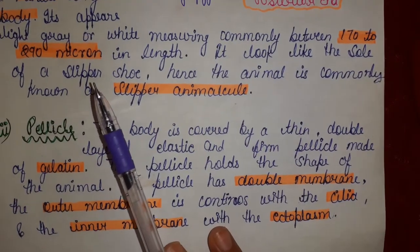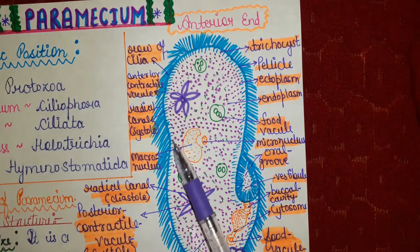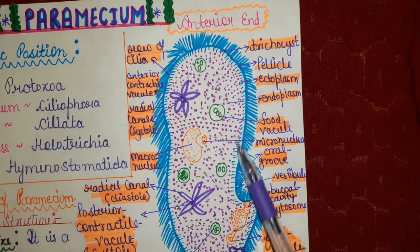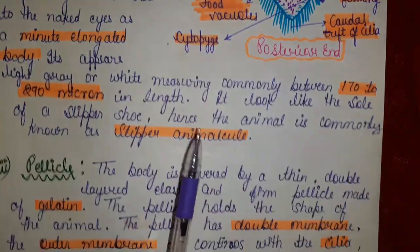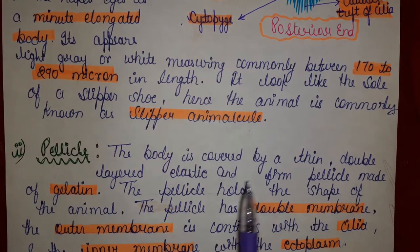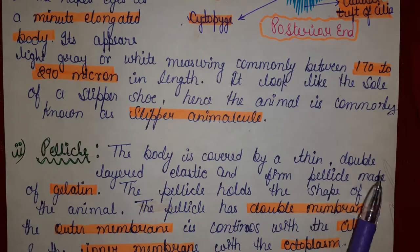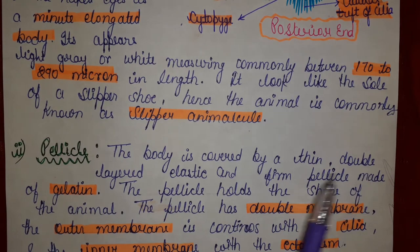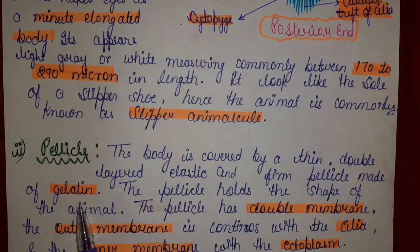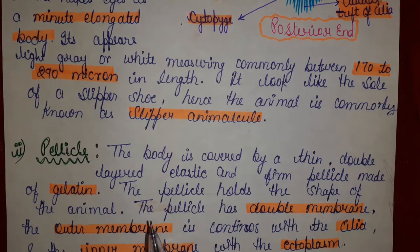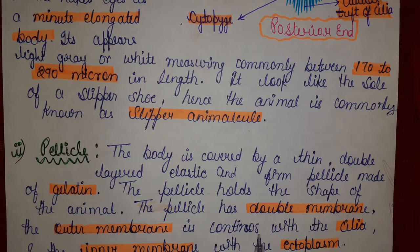Next is the pellicle. As you can see in this diagram, the pellicle is our outer cover. The body is covered by a thin, double-layered, elastic and firm pellicle made of gelatin. The pellicle holds the shape of the animal. The pellicle has a double membrane — the outer membrane is continuous with the cilia and the inner membrane with the ectoplasm.